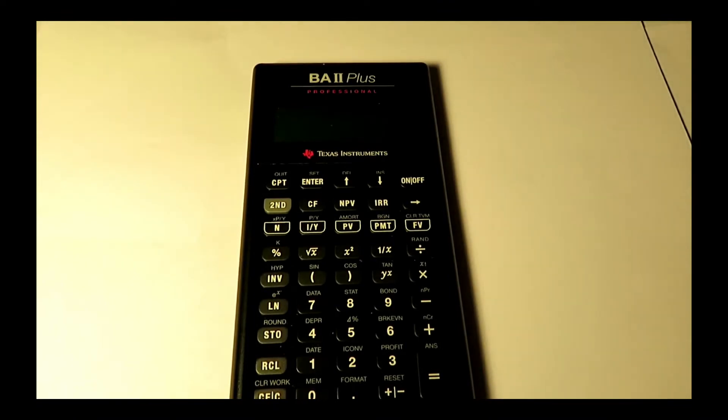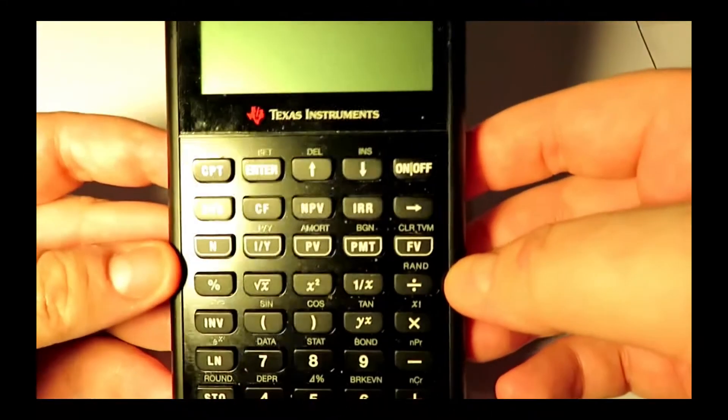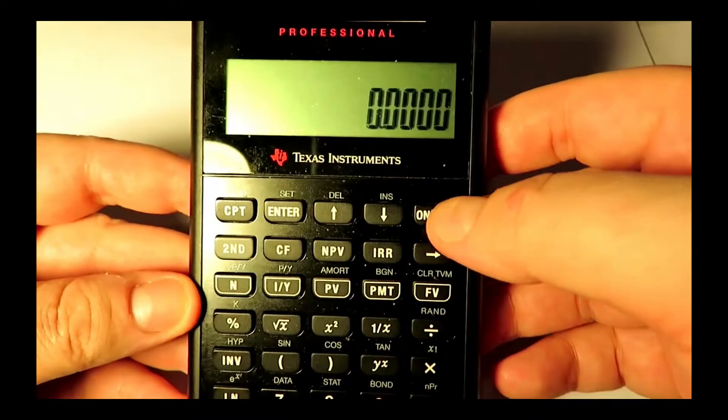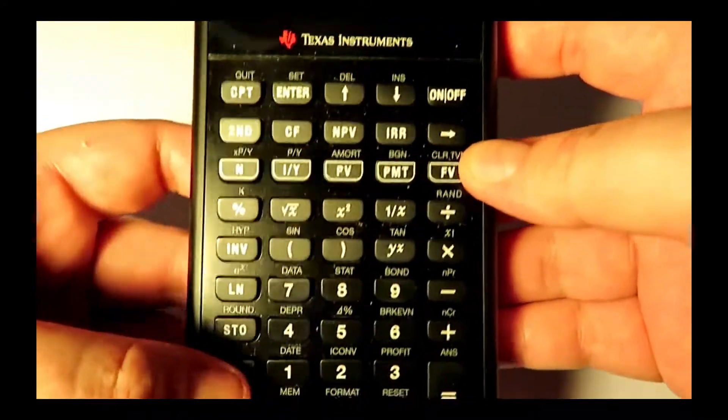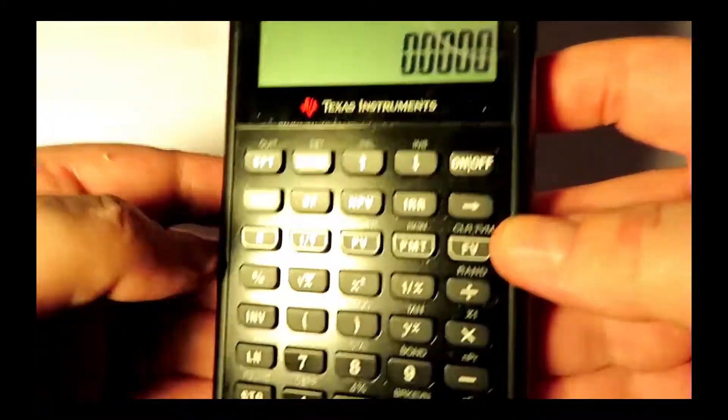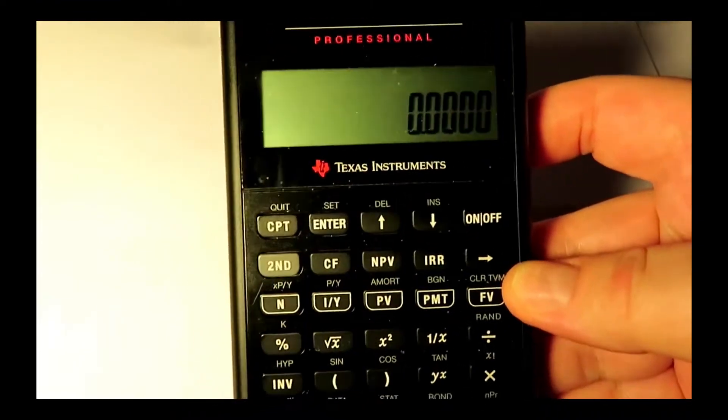Okay, here's our live demonstration on how to set the decimal places on a Texas Instruments BA2+. Alright, so here we have our calculator. First things we've got to do, turn it on. Better clear work if I had anything there. Alright, so the steps to set the decimal places.